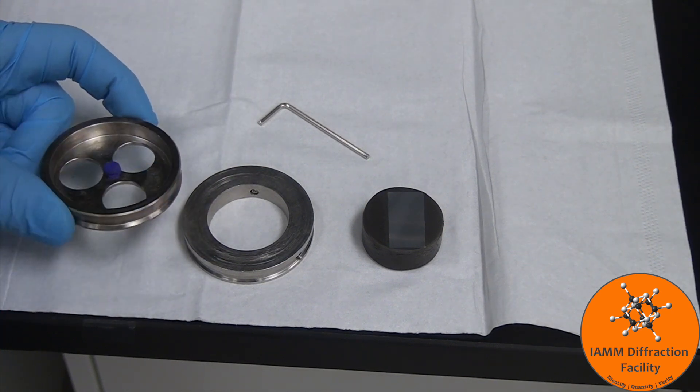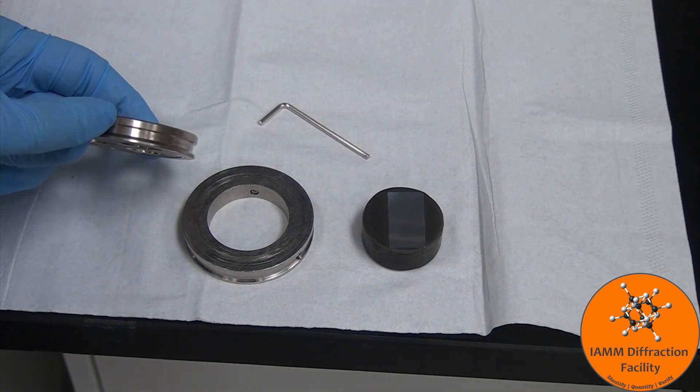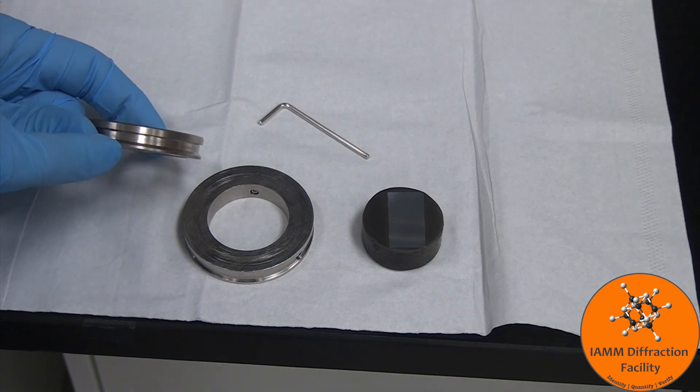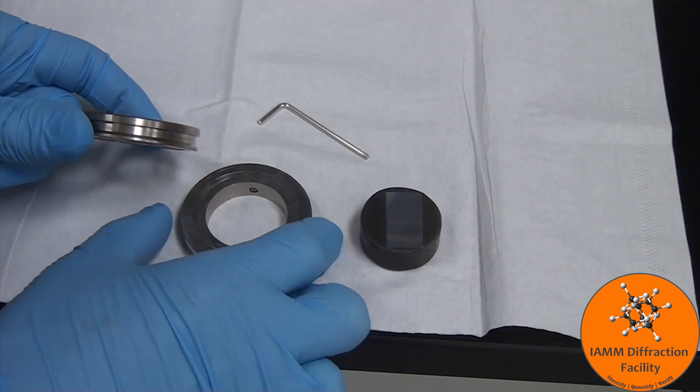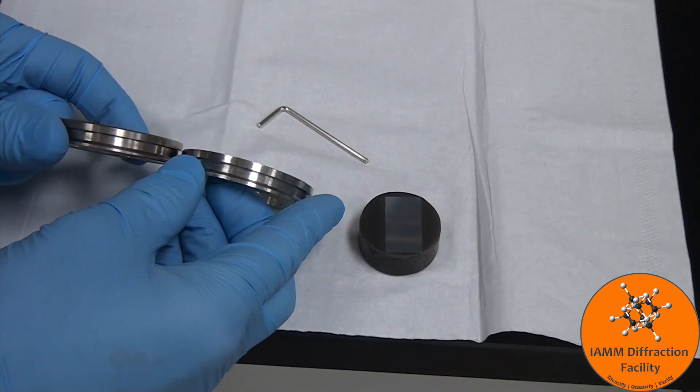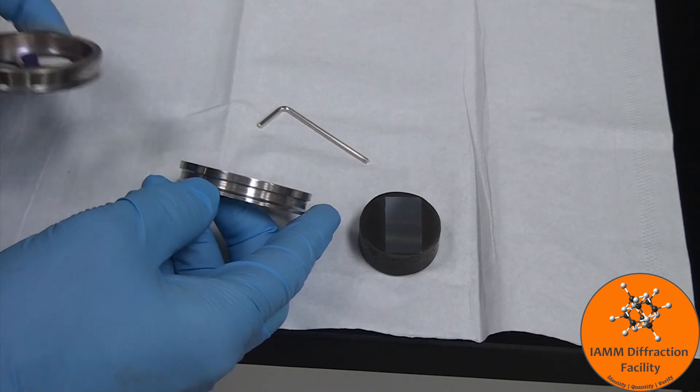This is the top part. And look at that. This has a thicker section up top, thinner section on the bottom. That tells me that this is the upright position for my puck holder.